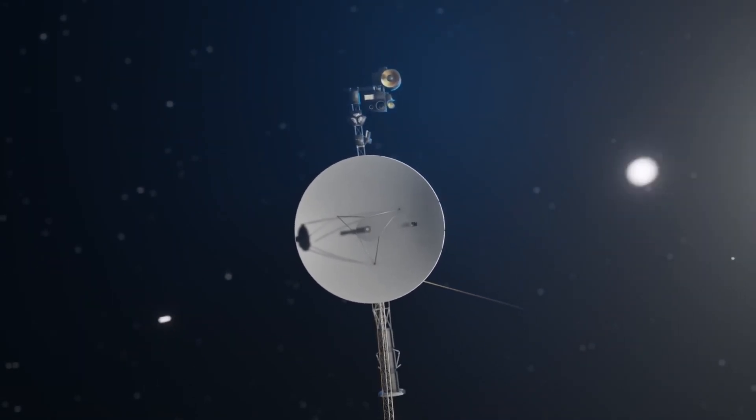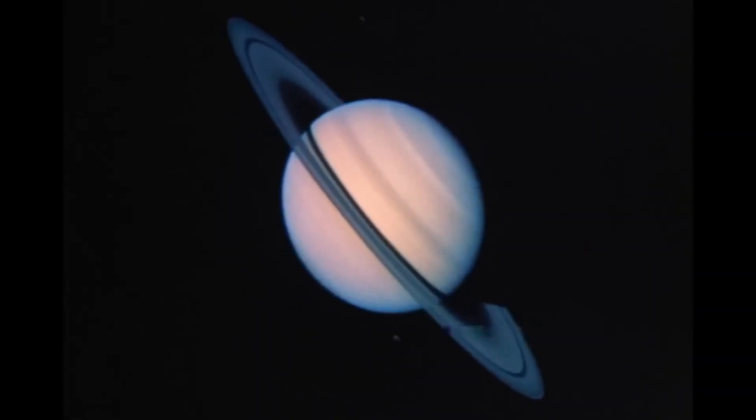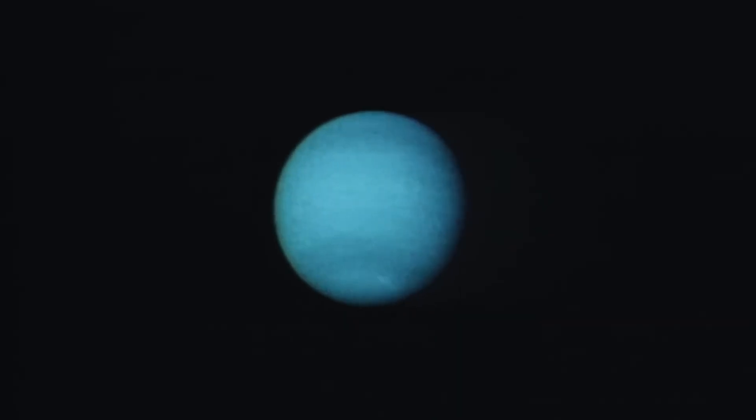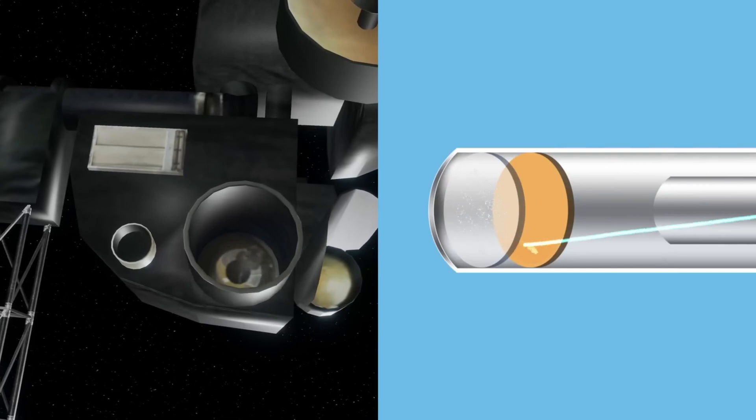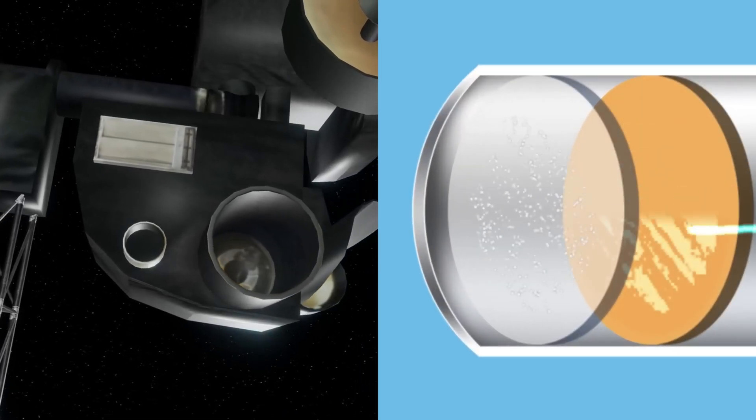But why were the cameras turned off and what would it take to turn them back on? In this video we're going to look at how the cameras on Voyager 1 actually worked and what they might see if they were turned back on.